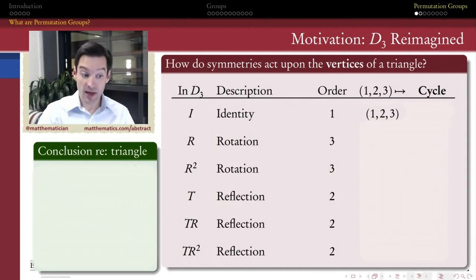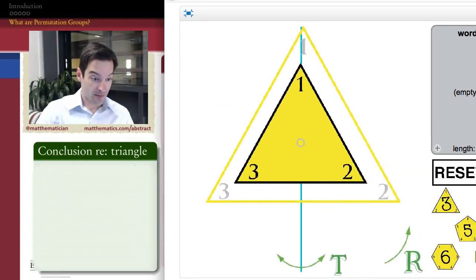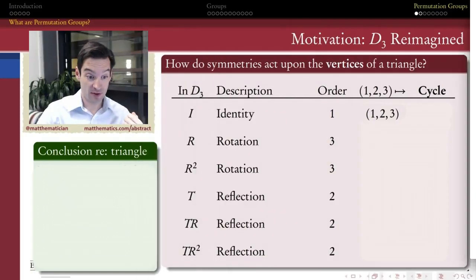One way of notating these permutations might be, for example, to just list what vertices end up in positions one, two, and three. So for the identity, not rotating or flipping this triangle at all, I'm just going to list in order one, two, and three. So I'm going to run through these positions one, two, and three and list which vertices occupy those positions. So that might be one way of notating the identity.